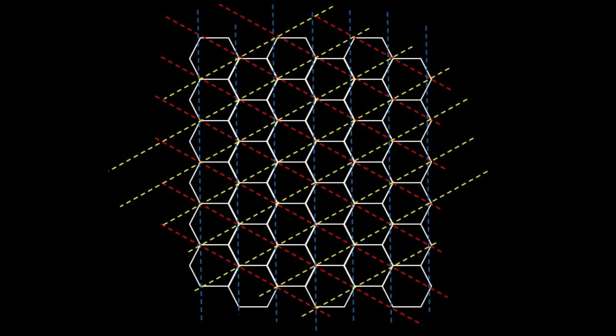Here they are superimposed on top of each other. So if I'm going to make this for light, I would need to have three diffraction gratings stacked on top of each other at these different angles.